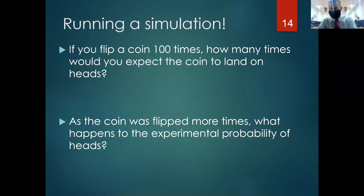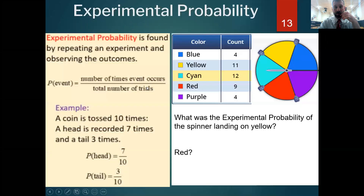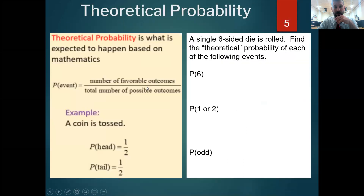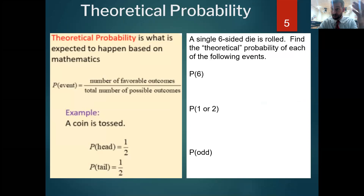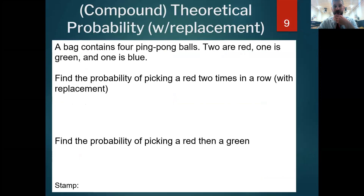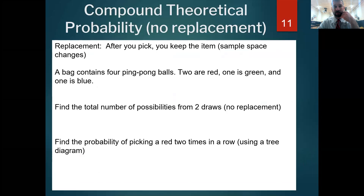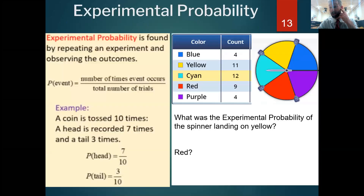Welcome to part three of our lecture series on probability. What we talked about in the past was a couple of different types of probability: theoretical probability, which is like our perfect world probability — on a dice, one of every six; on a coin, one of every two. We also talked about compound probability of several events, and experimental probability when we actually run a chance event and observe what happens.